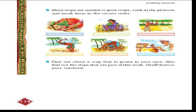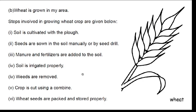Find out a crop that is grown in your area and write its name. Also find out the steps involved in growing it and draw them in your notebook. For example: first, the soil is prepared; second, seeds are sown; third, the crop is irrigated properly; fourth, the crop is ready and we cut it; and the last step is that we store it or sell it.